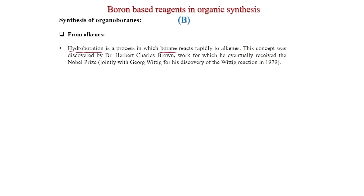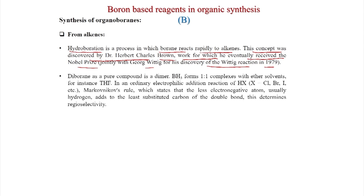Hydroboration is a process in which borane reacts rapidly with alkenes. This concept was first discovered by Dr. Herbert Charles Brown, and for his work he eventually received the Nobel Prize jointly with George Wittig for his discovery of the Wittig reaction in 1979. This pioneering discovery of hydroboration and the many conversions of hydroborated products have been used in many natural products syntheses.